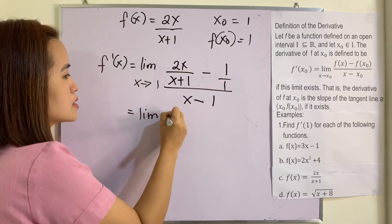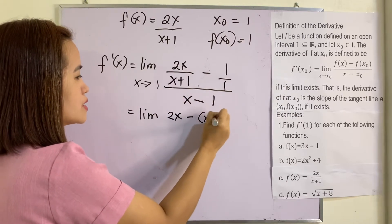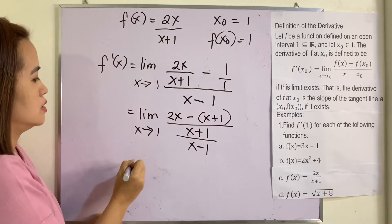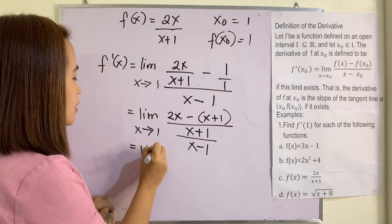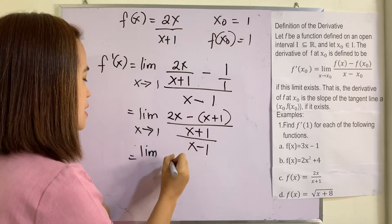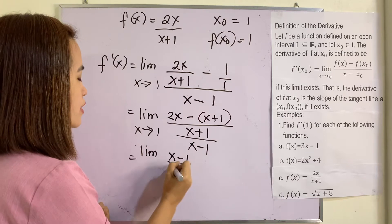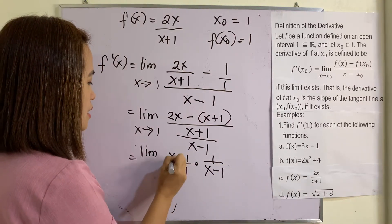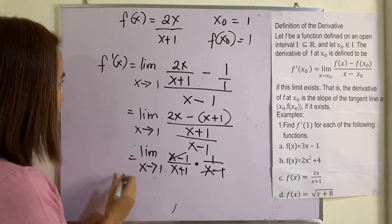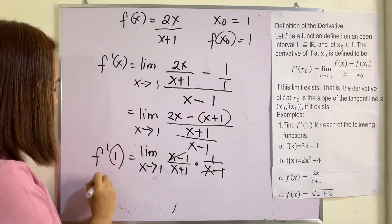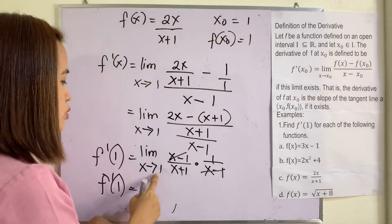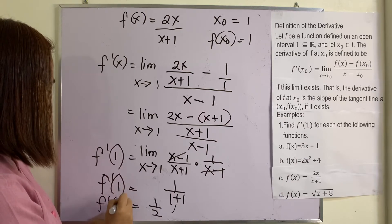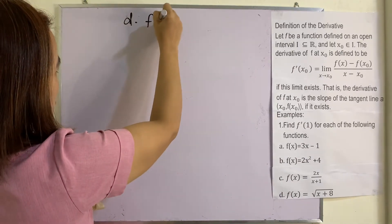Simplifying the numerator: 2x minus (x plus one) over (x plus one), which gives x minus one over (x plus one). Dividing by (x minus one) is the same as multiplying by its reciprocal. The (x minus one) terms cancel. Substituting x equals one gives one over one plus one, which is one over two. So f prime of one equals one half.